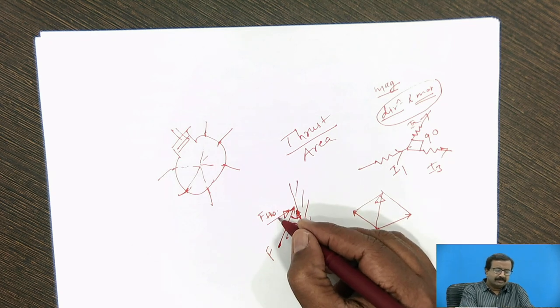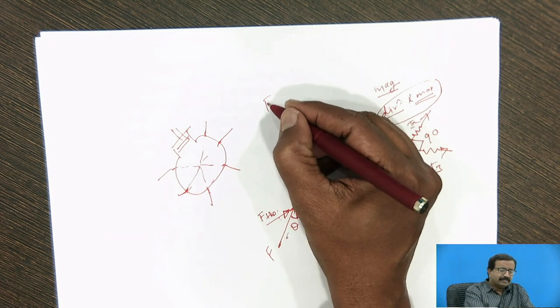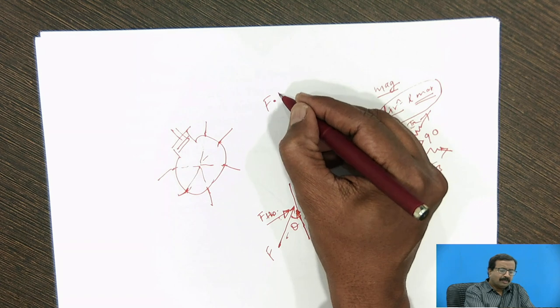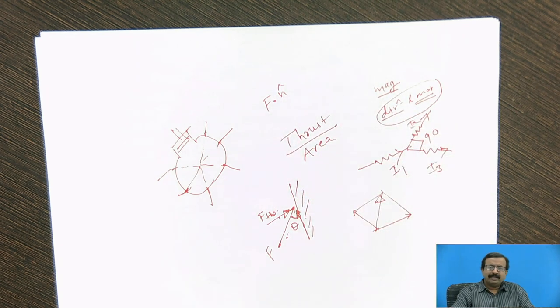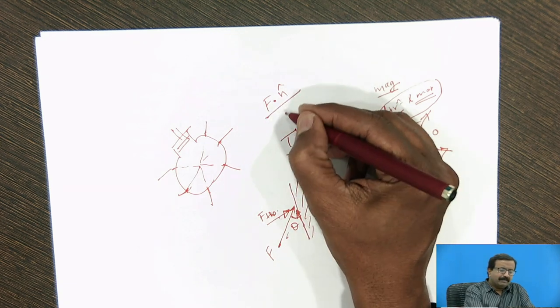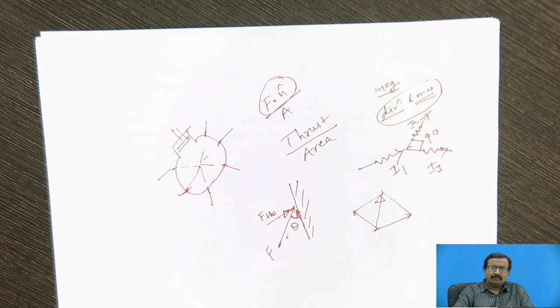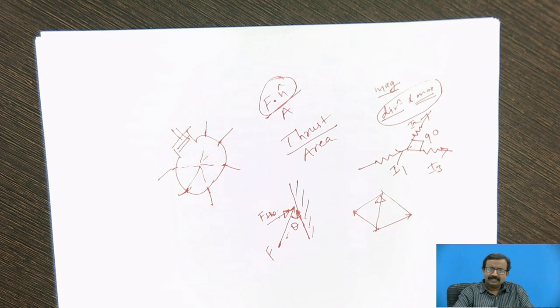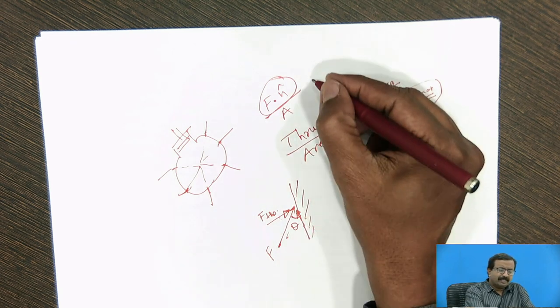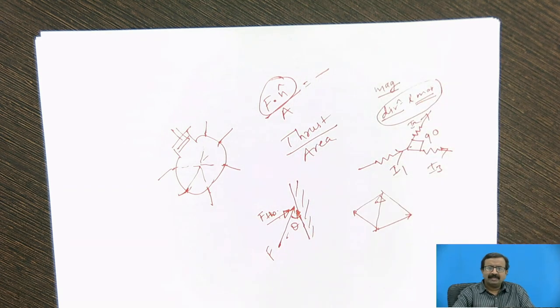Then what is thrust? So this component is nothing but it is f dot n cap. So when I take around the normal direction, what is the component present and divide it by area, what I get? This is the dot product. Dot product is a scalar quantity. It is a scalar product rather. So scalar upon scalar becomes a scalar. And hence pressure is a scalar quantity.